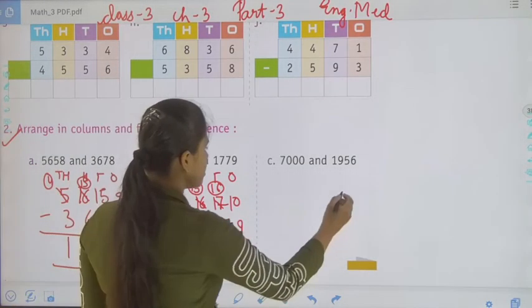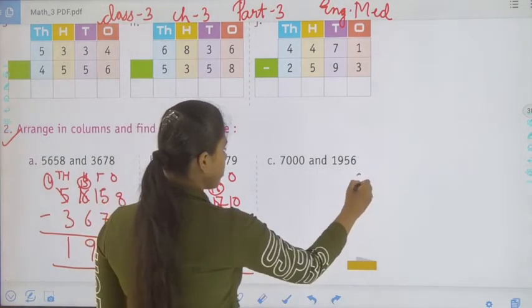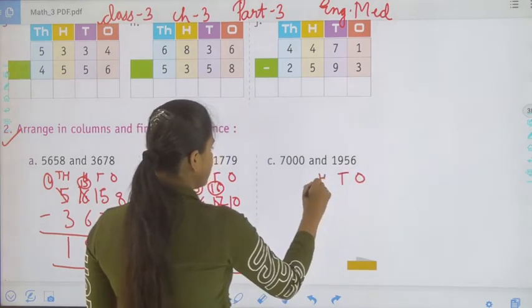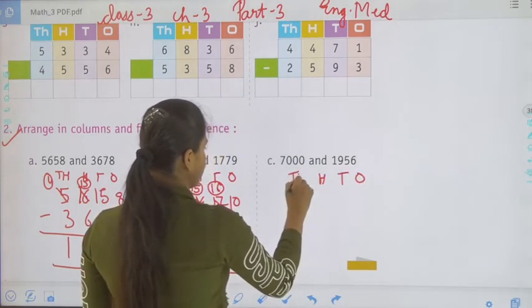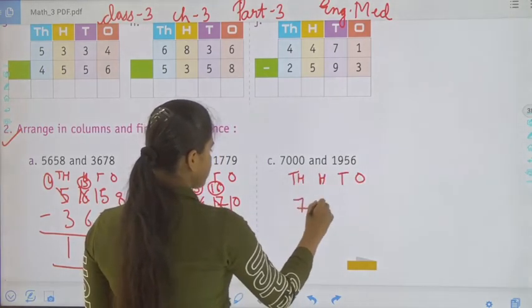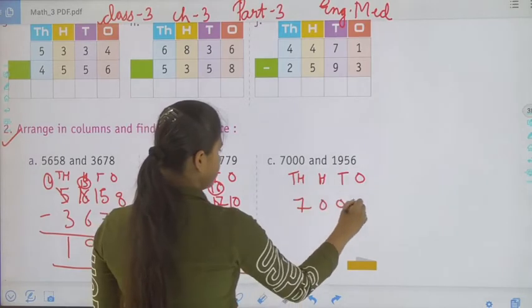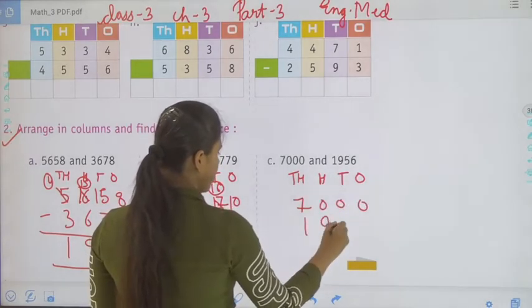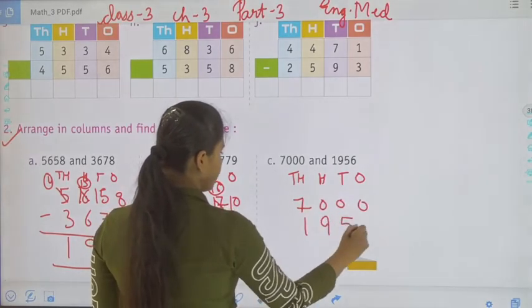Now move to the next. Again we have to write 1s, 10s, 100, 1000. That is 7,000 minus 1,956.